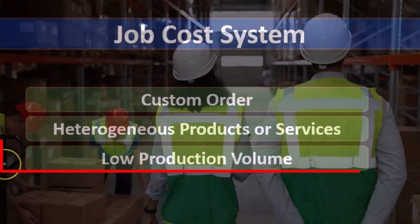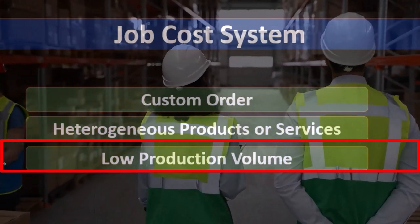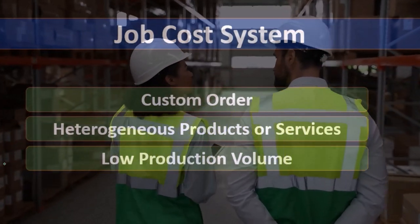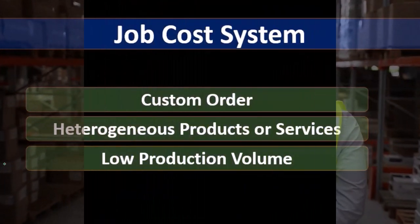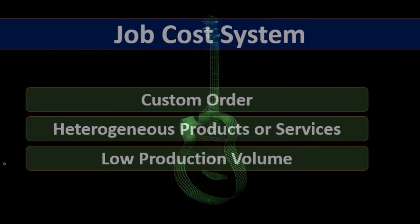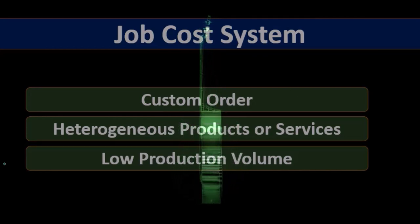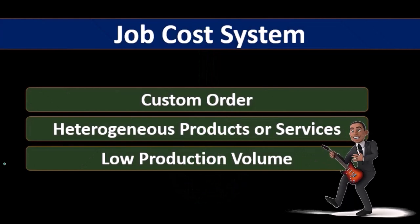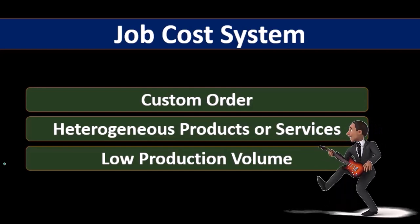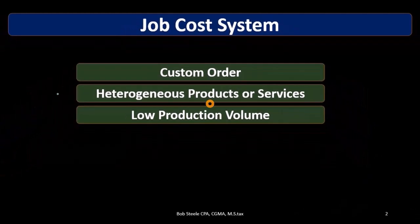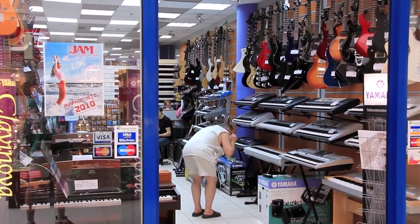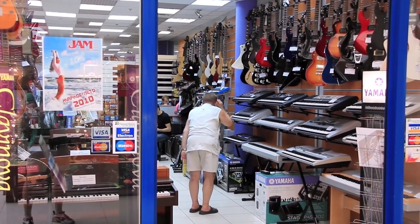Low production volume is another characteristic. Low production volume means we're not producing as many items as in a process cost type of inventory system. If we're making custom guitars, we'll produce far fewer of them — but we charge a higher price. As opposed to just stamping out identical guitars at high volume with less customization. A job cost system follows from having differentiation and customness, meaning products are different in nature, which typically means production volume will be lower.